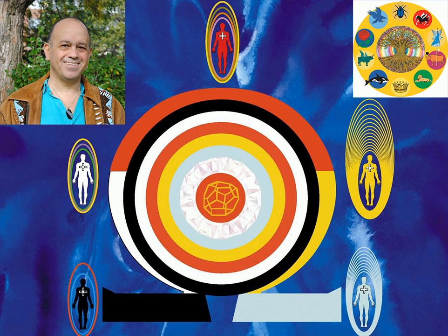The second step of this journey is to visualize yourself as three persons and to do the passage to the other side of the veil, which is called the mystical death experience.